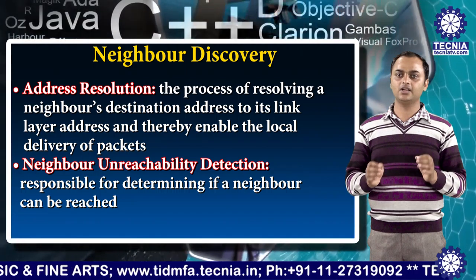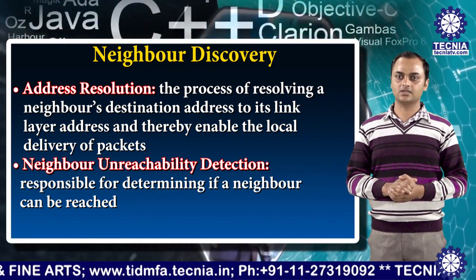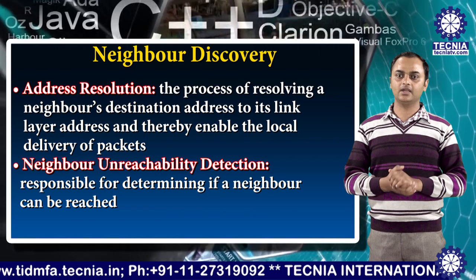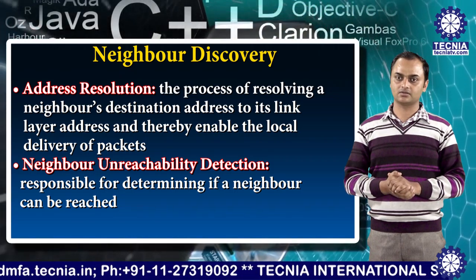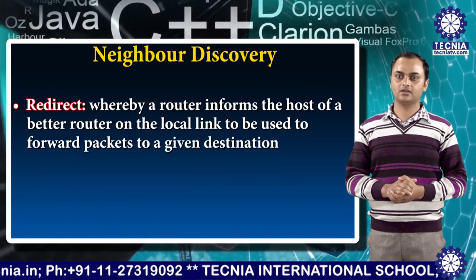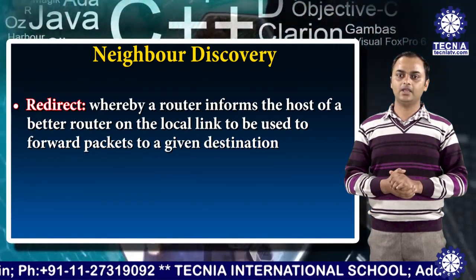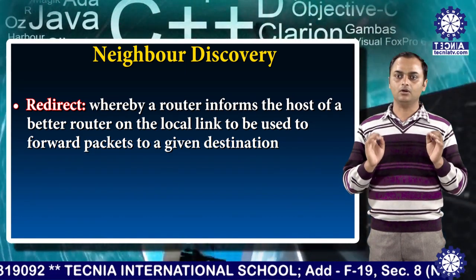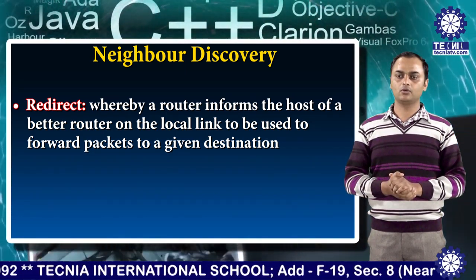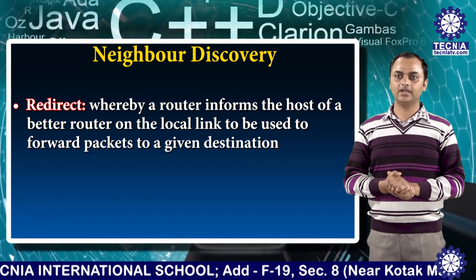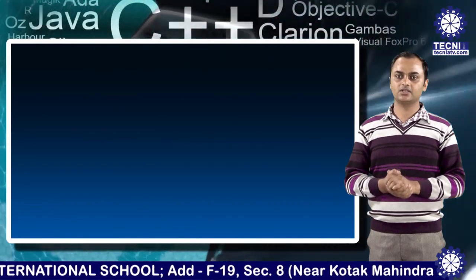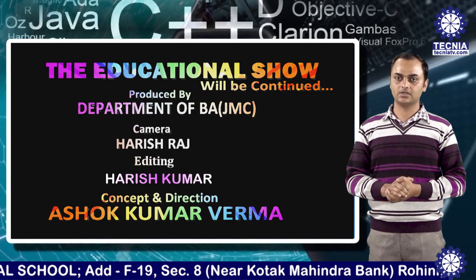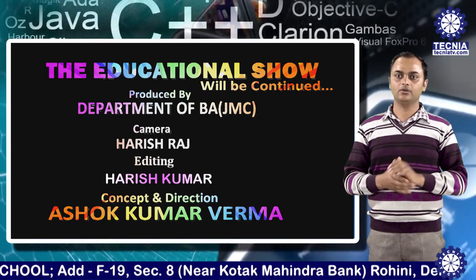Fourth is NIWA Unreachable Detection, which is responsible for determining if a NIWA can be reached. And last is redirect, whereby a router informs the host of a better router on the local link to be used to forward packets to a given destination. So I hope you understand the topic of NIWA Discovery. Thank you very much.